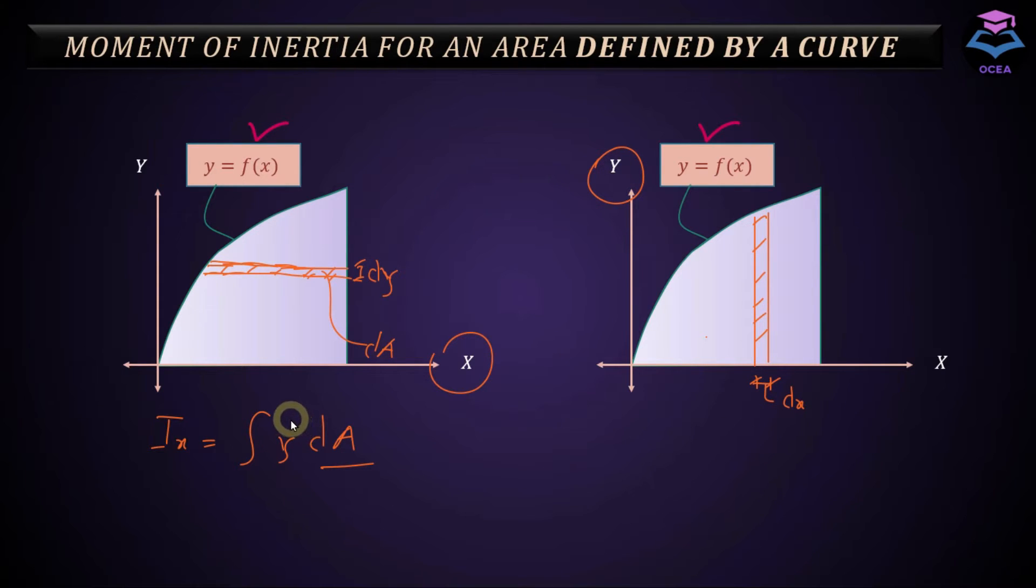And this differential width would be equal to dx. And there should be a square here. So Iy is equal to integral x squared dA. Just calculate dA, that is the area of this rectangular strip, and insert it here. And solve it. You'll get your moment of inertia about y axis. Okay, let me illustrate this with an example.